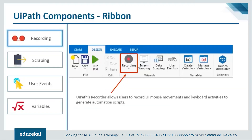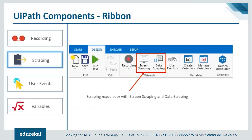The next ribbon component is scraping, which means extracting information from a screen. There are two types: screen scraping, used for desktop applications or unstructured content, and web scraping, used for websites with a defined structure that allows iteration. Web scraping is only possible when the website has a defined structure; otherwise you use screen scraping.